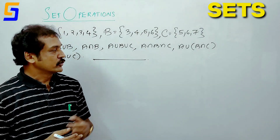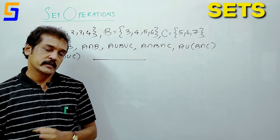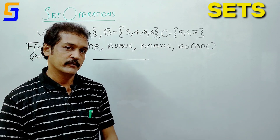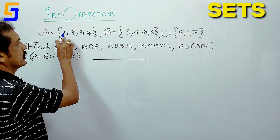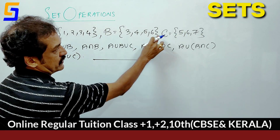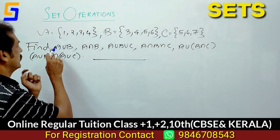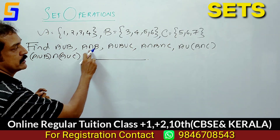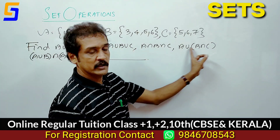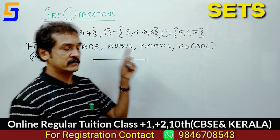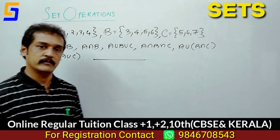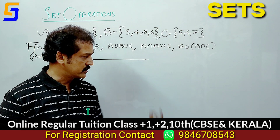Let's try one question. A equals set {1, 2, 3, 4}, B equals set {3, 4, 5, 6}, and C equals set {5, 6, 7}. Find: A union B, A intersection B, A union B union C, A intersection B intersection C, and A union (B intersection C) equals A union B intersection A union C.